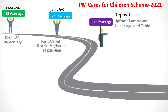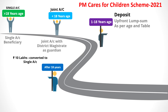For deposits, if the child's age is from one year to 18 years, there will be an upfront lump-sum deposit of a certain amount as per the age table in the next slide. For example, if the child is one year old, approximately 2 lakh rupees will be deposited; for two years, around 3 lakh, and so on up to 18 years. If the age is 18 years or above, 10 lakh rupees will be deposited upfront at one time.